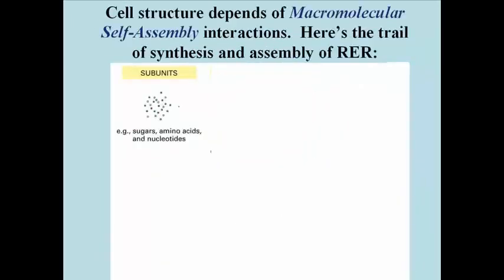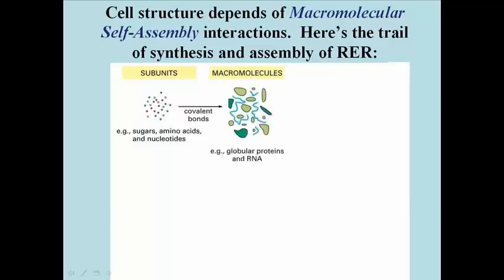Let's follow the assembly of rough endoplasmic reticulum in this slide, as an example of productive macromolecular interactions. First of course, monomeric subunits like the amino acids here, and nucleotides, are polymerized in dehydration synthesis reaction to form polymers that fold into specific shapes.